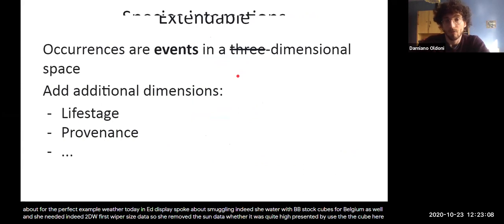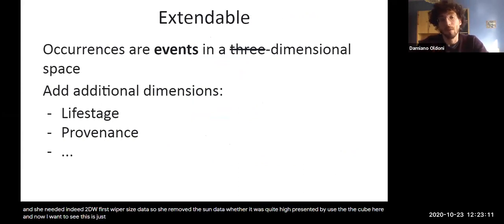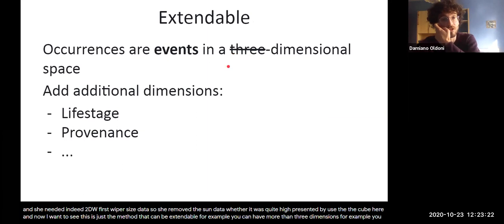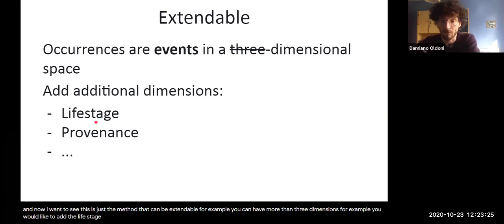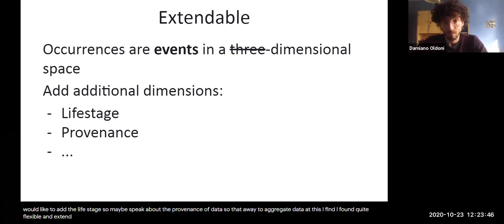And now I want to say this is just a method that can be extendable. For example, you can have more than three dimensions. For example, you'd like to add the life stage of the individuals, of the occurrences. So for example, if it was a human and you're able to, you want to maybe speak about the provenance of this data. So this is just a way to aggregate data that I found quite flexible and extendable.